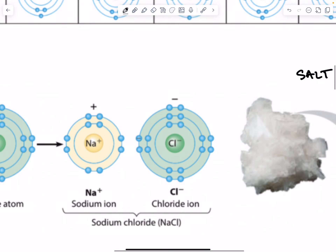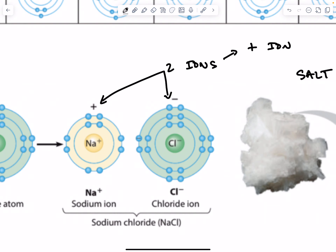Notice that once we've done that, they're both happy. Sodium has a full outer shell, chlorine has a full outer shell, because this electron has moved from sodium to chlorine. But we've created two ions — one positive ion and one negative ion. And as you know, opposites attract.